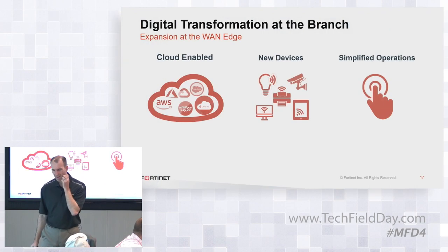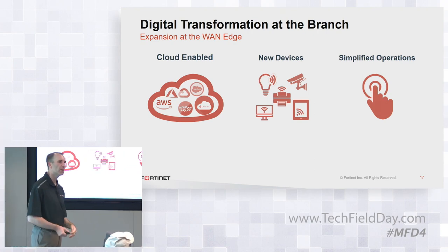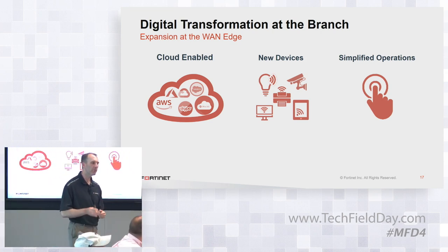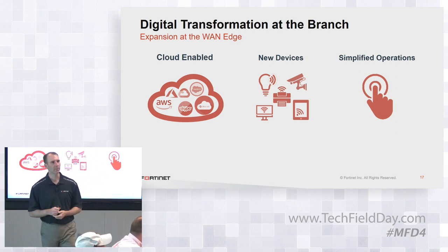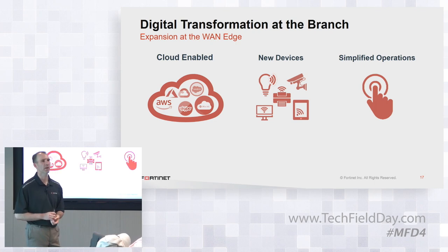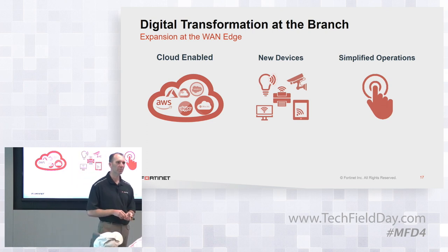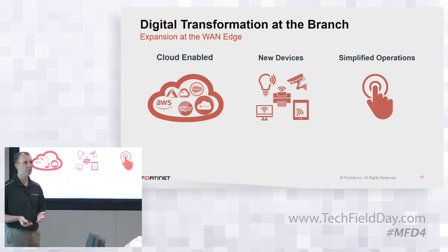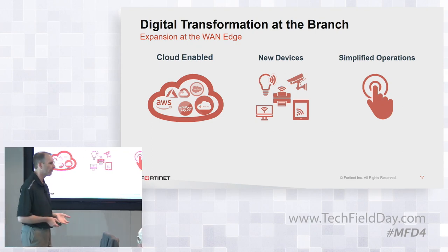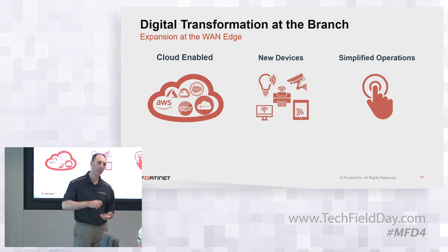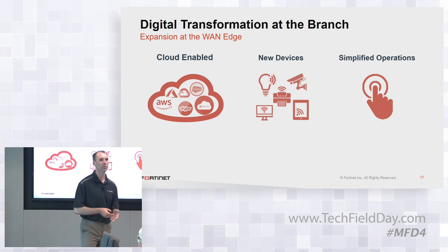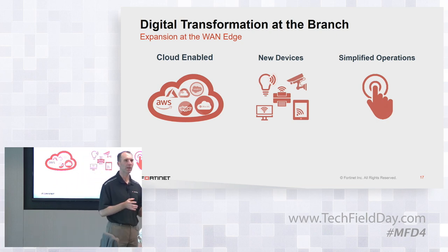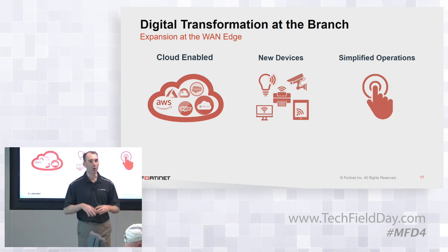I had this slide titled something different, but I just couldn't resist because Lee is so excited about digital transformation that I had to rephrase it as digital transformation. We're seeing a lot of expansion at the WAN edge — branches are changing, cloud enablements and new devices. Really what it boils down to is that people are leveraging technology to simplify their operations through cloud applications and new IoT devices.